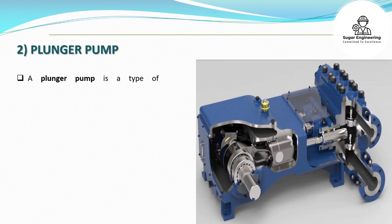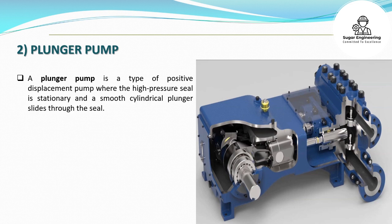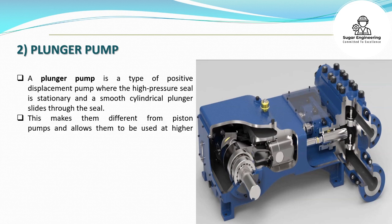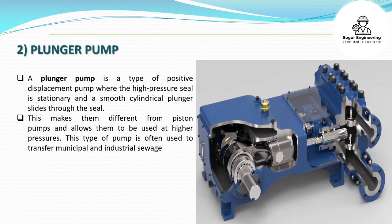2. Plunger Pump: A plunger pump is a type of positive displacement pump where the high-pressure seal is stationary and a smooth cylindrical plunger slides through the seal. This makes them different from piston pumps and allows them to be used at higher pressures. This type of pump is often used to transfer municipal and industrial sewage.